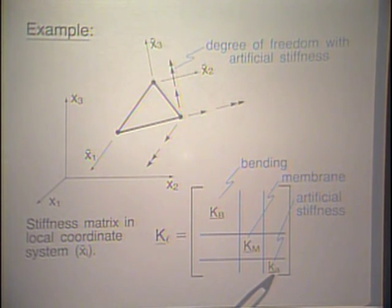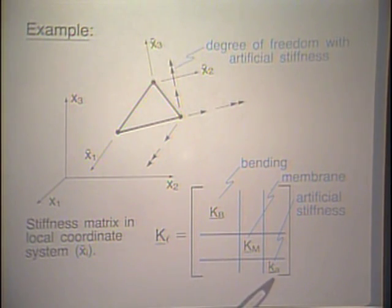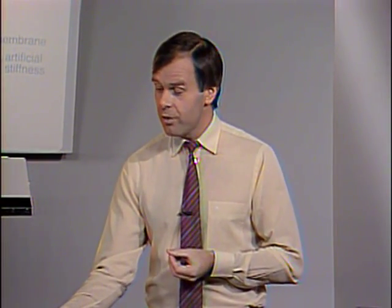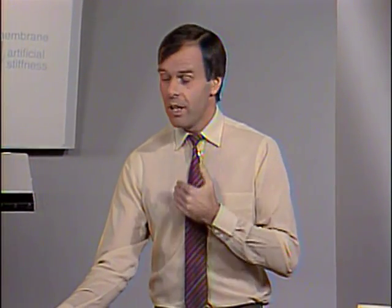This artificial stiffness is quite bothersome. In nonlinear analysis it can provide problems, and we really don't like it. But if we use this approach we have to introduce it and live with the difficulties. The other approach — using isoparametric elements with curved elements — avoids this artificial stiffness entirely, because our experience shows that introducing it in nonlinear analysis leads to many difficulties in the analysis procedure. So for the more modern elements we get rid of it.